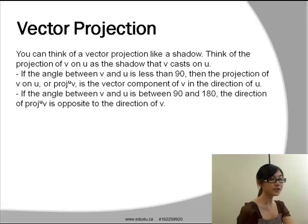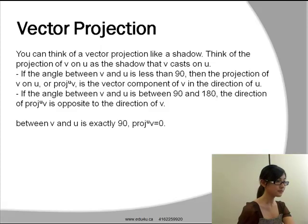If the angle between these two vectors is between 90 to 180 degrees, the direction of the projection of v on u is opposite to the direction of u.